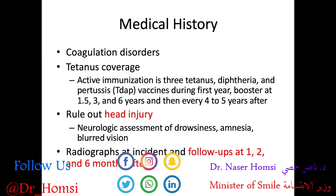We want to make sure the patient is covered with the tetanus vaccine. The active immunization is three Tdap vaccines — covering tetanus, diphtheria, and pertussis — during the first year of age, a booster at 1.5, 3, and 6 years, and then every 4 to 5 years after that. If they're uncovered, they really need to get a tetanus antitoxin, but if there's dated coverage, they can get a tetanus booster.